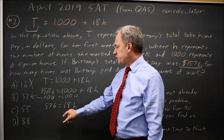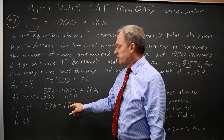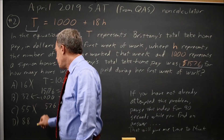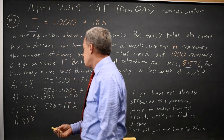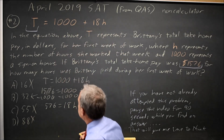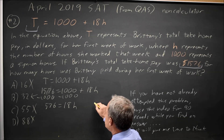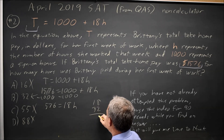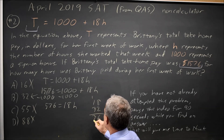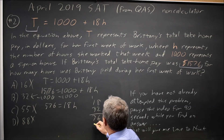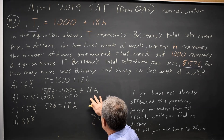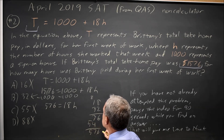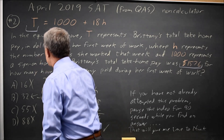If h were 50, 50 times 18 is 900 — that's too big. So let's check h equals 32. 18 times 32: 2 times 8 is 16, 3 times 8 is 24, plus 76 — that does work. So the correct answer is B.